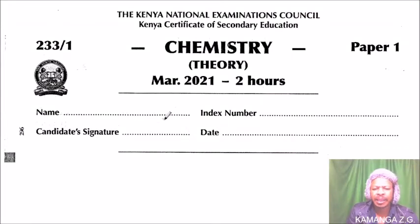This is Chemistry Paper 1 that was done in March 2021, which was meant to be for 2020 but was delayed because of COVID.